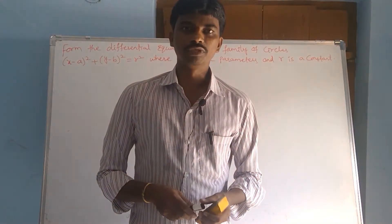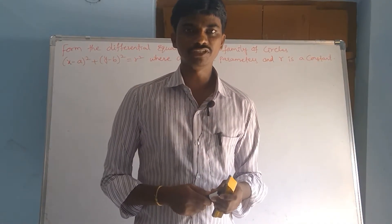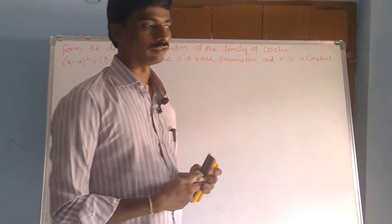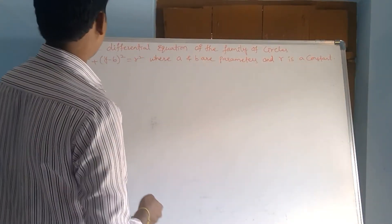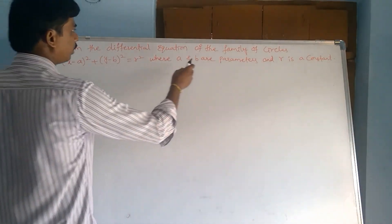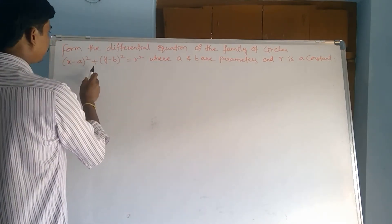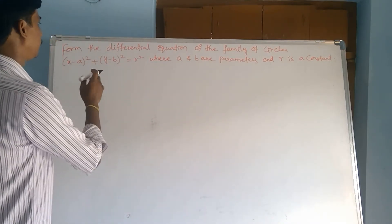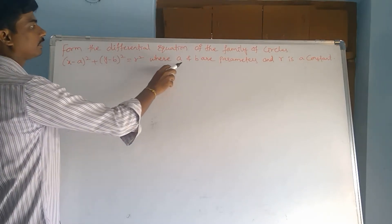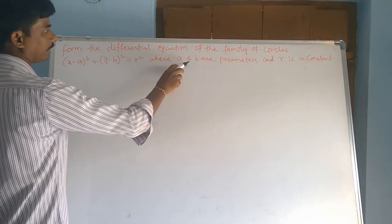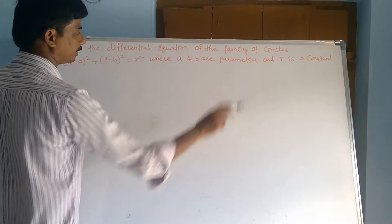Welcome to Rajesh Rekarov. Today our topic is differential equation. This is a very important problem. Find the differential equation of the family of circles: (x minus a) squared plus (y minus b) squared equals r squared, where small a and b are parameters and small r is a constant.